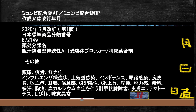添付文書2枚目、ミコンビ配合錠という薬です。持続性AT1受容体ブロッカーおよび利尿剤の合剤です。その他の副作用項目に、インポテンツ、耳鳴り、味覚障害、皮膚エリテマトーデスなどが載っています。今回関係するのは「高カルシウム血症を伴う副甲状腺障害」という記載です。副甲状腺機能亢進症になると高カルシウム血症になるという点から、これは副甲状腺機能亢進症を意味しています。